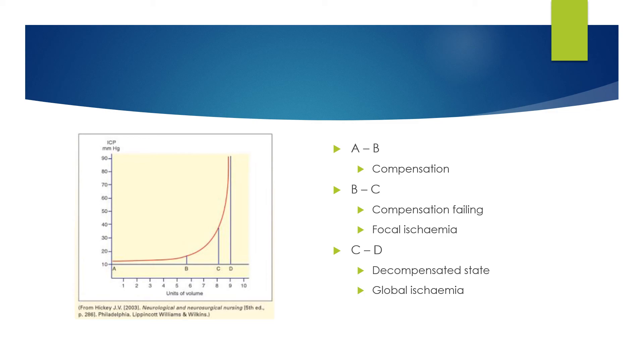But between B and C, as the units of volume continue to increase, we start seeing a rise in intracranial pressure. The compensatory mechanisms are now failing, and we are seeing focal ischemia because not just the CSF has been forced out, but blood is now being forced out, and that is leading to ischemia of brain tissue.